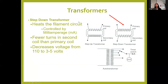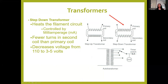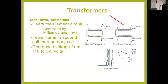Looking at the step-down transformer diagram: it heats the tungsten filament, it heats up and makes an electron cloud, and it's controlled by MA. There are fewer turns in the secondary coil than the primary, and that's part of why voltage goes down — decreasing from 110 to three to five volts. The step-down transformer is on the cathode side, where your tungsten filament is, and your electricity runs through this transformer before it gets to the filament.